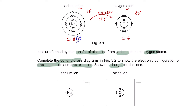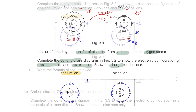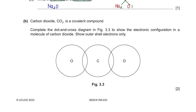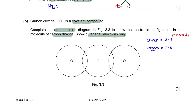A sodium ion loses 1 electron to become stable, and an oxygen atom requires 2 more electrons to become stable. Part 2: write the formula of sodium oxide. Sodium has a charge of +1 and oxygen has a charge of −2. To form a compound, the charges cross over, giving Na₂O₁, which is written as Na₂O. Question 3B: carbon dioxide CO₂ is a covalent compound. Complete the dot and cross diagram in figure 3.3 to show the electronic configuration in a molecule of carbon dioxide, showing outer shell electrons only.